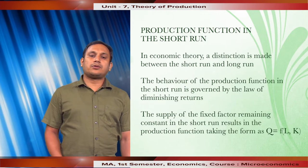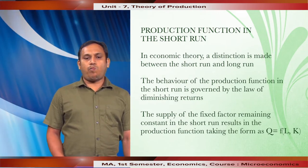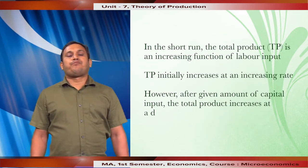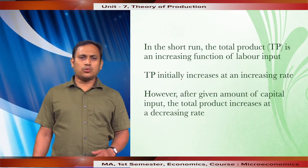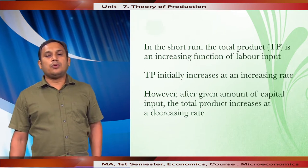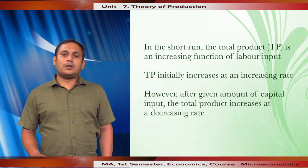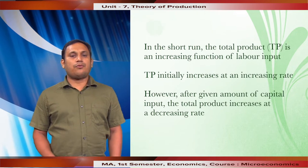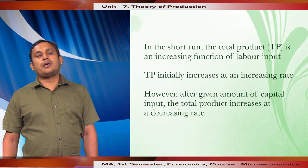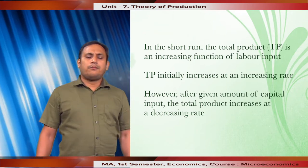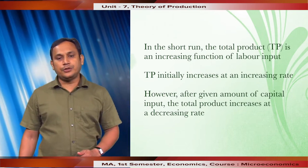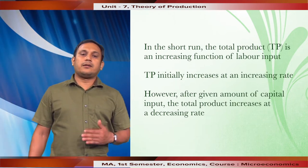With the supply of the fixed factor remaining constant in the short run, the production function takes the form Q = f(labor, capital). In the short run, some factors are constant, so the total product is an increasing function of labor input — as labor increases, total output also increases. Total output initially increases at an increasing rate, because for a given amount of capital, as labor input increases, the productivity of both factors increases. However, as labor input increases further, it results in a fall in the productivity of the inputs and as a result total product increases at a decreasing rate.